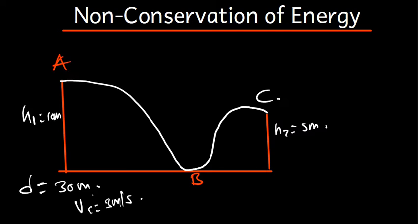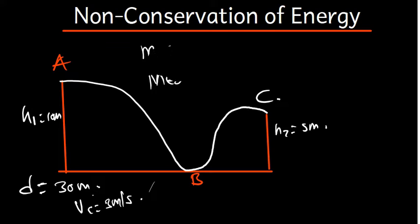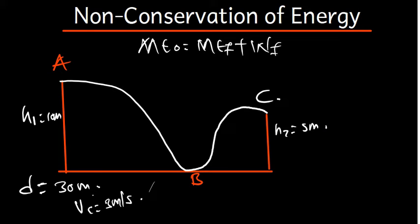To find the friction force, since there is friction, this is non-conservation of energy. We write the formula: mechanical energy initial equals mechanical energy final plus the work done by the friction force. Our goal is to find how large the friction force is.